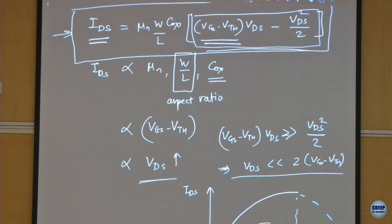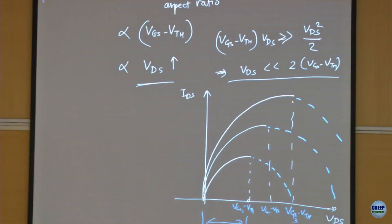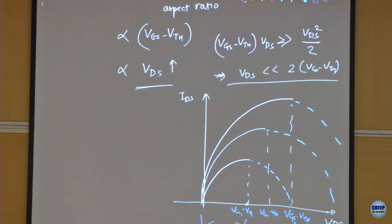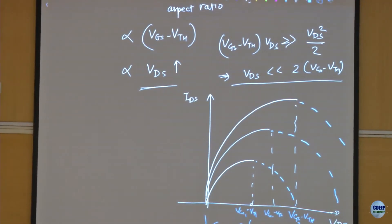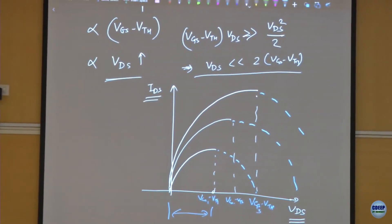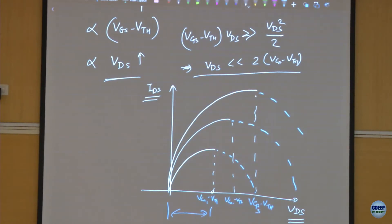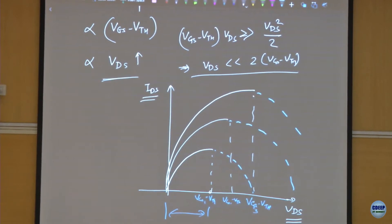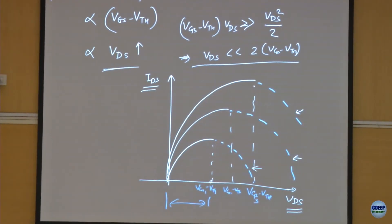If VGS increases there should be more current, and if VTH drops there should be more current. If we plot these characteristics — IDS versus VDS — it looks like a parabola and the center of the parabola is at VGS minus VTH. For different VGS values, the parabola moves such that the current increases. I have intentionally shown these as dotted lines because today we will talk about what really happens there.